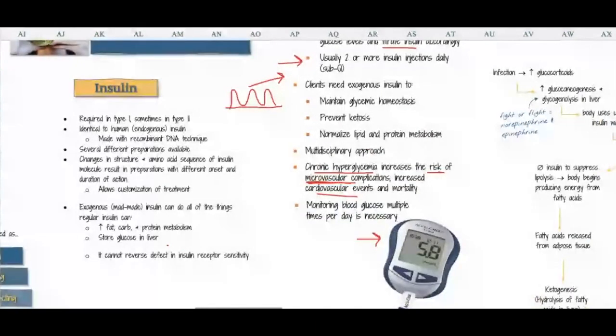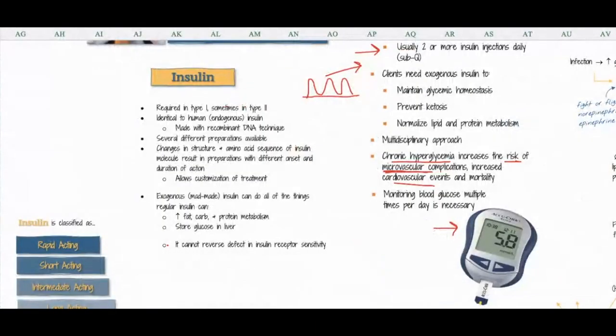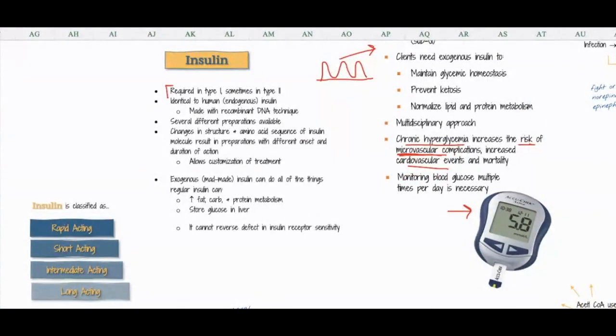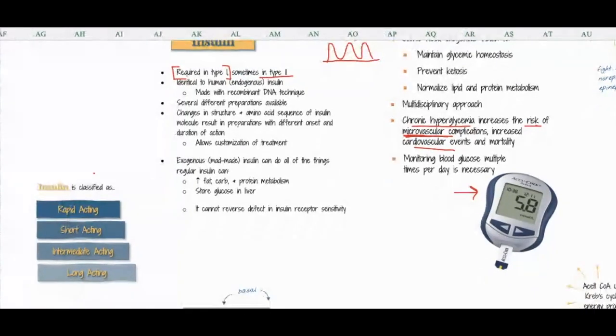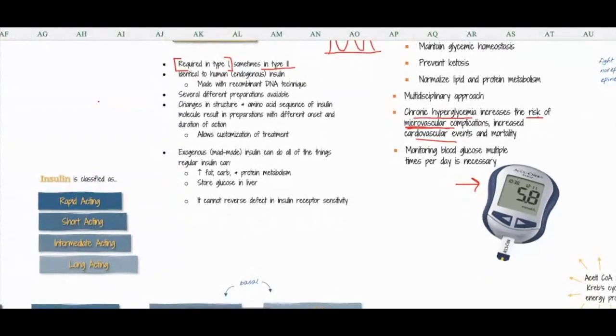So let's talk about insulin again. I put this like four times—it's always required in type 1, sometimes in type 2. Many people that we see in the hospital who have type 2 diabetes are on insulin, and that's because the population in the hospital are people who haven't necessarily been compliant, so they end up needing insulin as they get older.